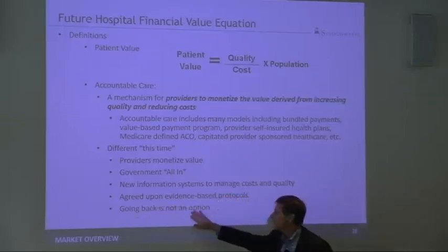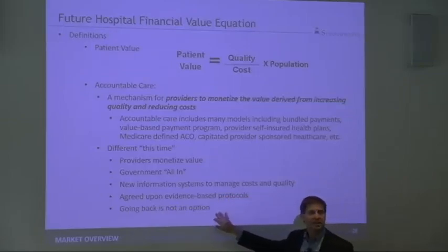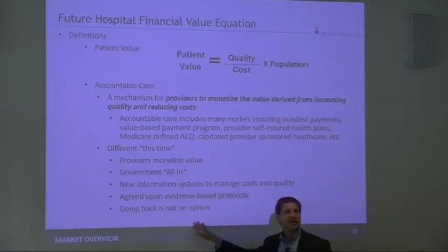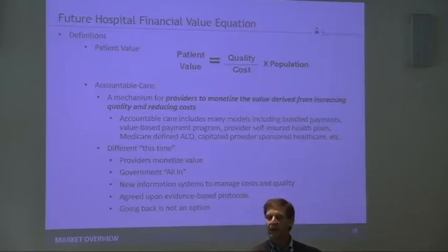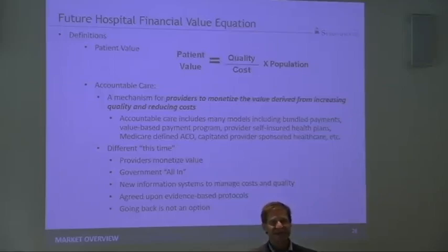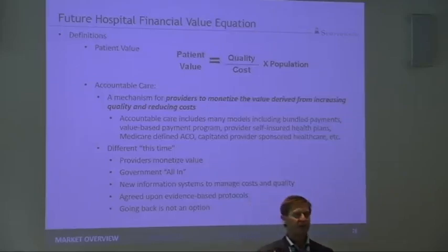The last one is: going back is not an option. We are the most expensive healthcare system in the United States — MHA classes, you understand that. Up until this point we could say we can be a little bit more expensive next year, a little more expensive the year after that, keep raising our costs and no one's going to care.